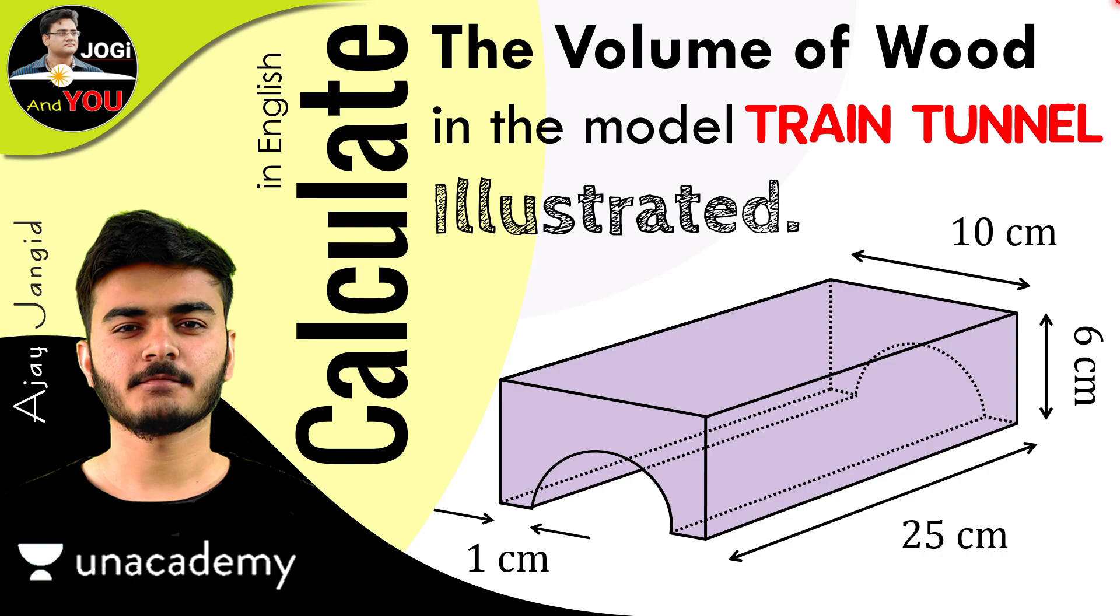We have a model of a train tunnel for this question and we used wood to make this tunnel. This purple color model is made of wood. So just find the volume of wood which is used to make this tunnel. For this, what measurements do we have? The length of this block is 25 cm, the height is 6 cm, and the width is 10 cm.